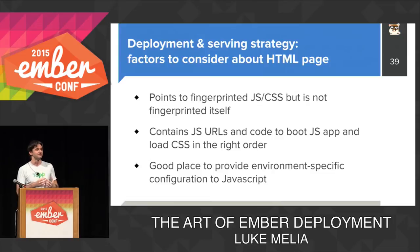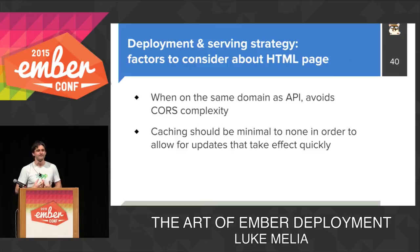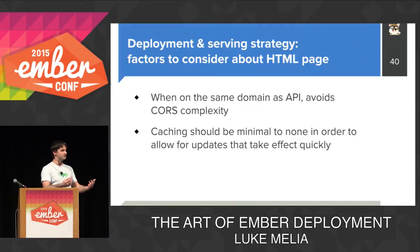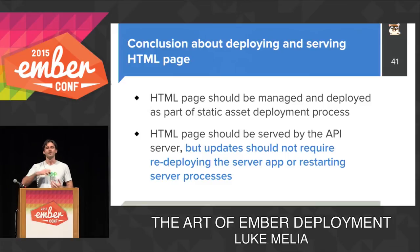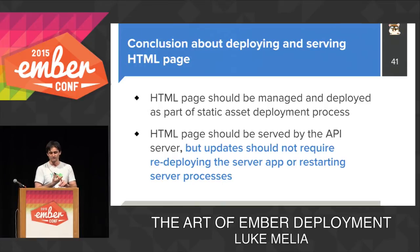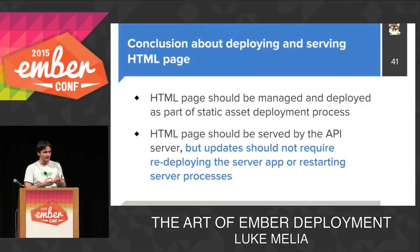HTML is also a great place to provide environment-specific configuration to your Ember app that you don't want baked into your JavaScript. If you can serve this HTML on the same domain as your API, you sidestep all the CORS complexity from having separate domains. And caching should be minimal to none, so that when you deploy a new version you're delivering it to new users ASAP. The conclusion is that HTML should be managed and deployed as part of your static asset build — your Ember app repo and build process — but somehow deployed to your API server, and updates should not require redeploying or restarting server processes.